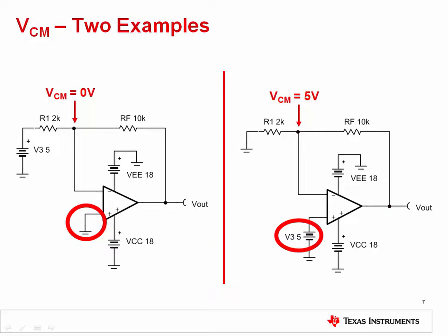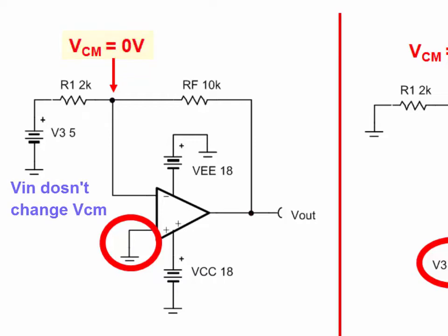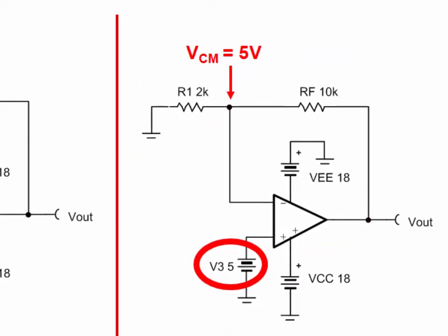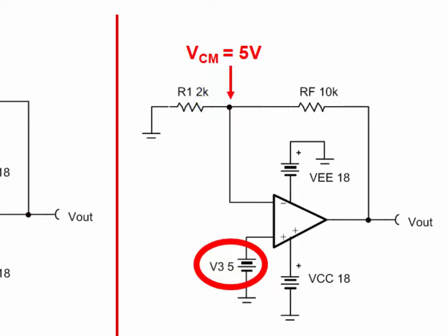Here are two circuits which have very different common mode considerations. The op amp in the circuit on the left is in an inverting configuration, and the non-inverting input is connected to ground or 0 volts. Because of the basic properties of op amps, the inverting input will also be at approximately 0 volts. Therefore, the common mode input voltage of this circuit is 0 volts and stays constant regardless of the input signal — this is a good topology to avoid common mode limitations. The op amp in the circuit on the right is in a non-inverting configuration, and the input signal and the common mode signal will track each other. Care must be taken in this configuration to avoid exceeding the common mode voltage limitations of the amplifier.